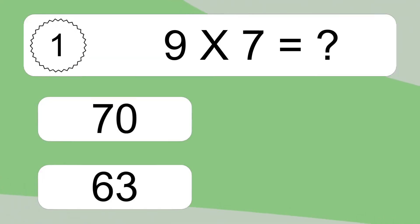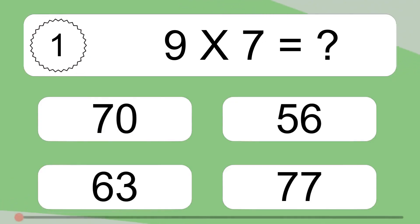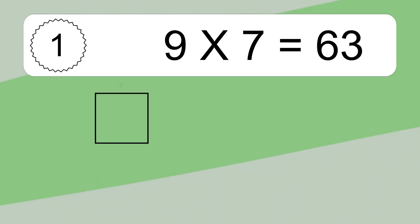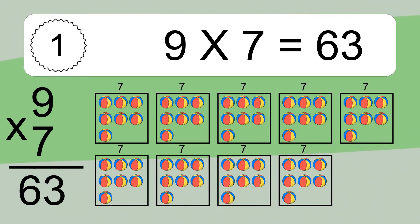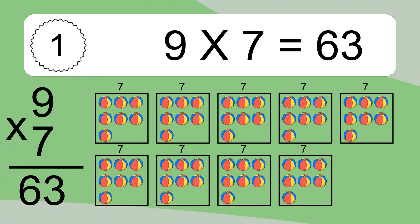Nine times seven equals what? 9 times 7 equals 63. We have 9 boxes, and each box has 7 colorful balls inside. If you count all the balls in all the boxes together, you will have 9 times 7 balls. This equals 63 balls.